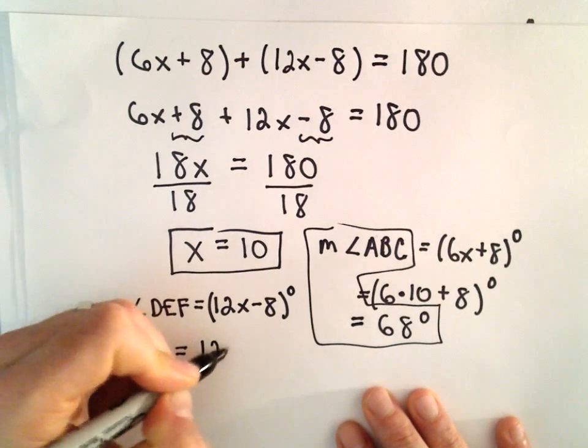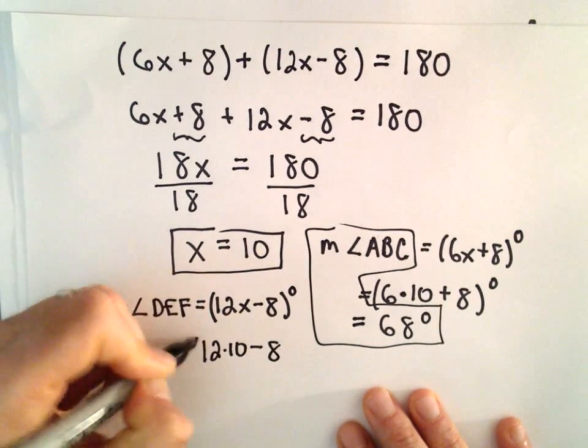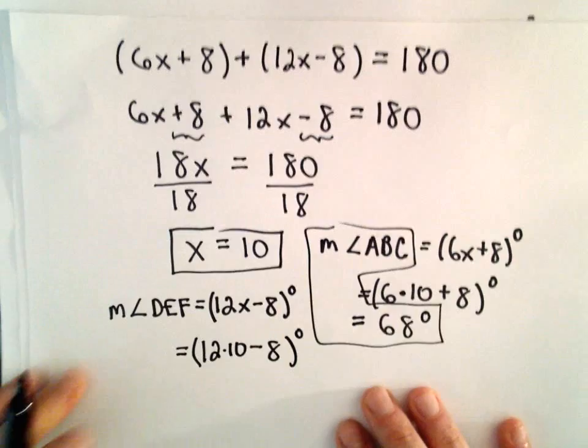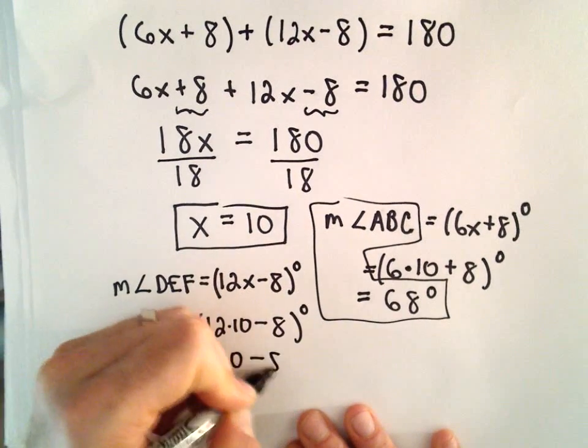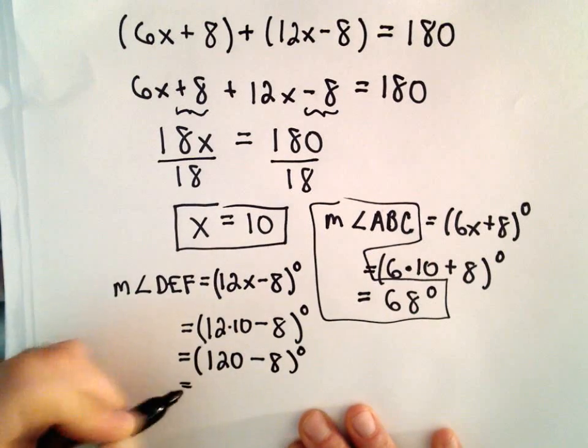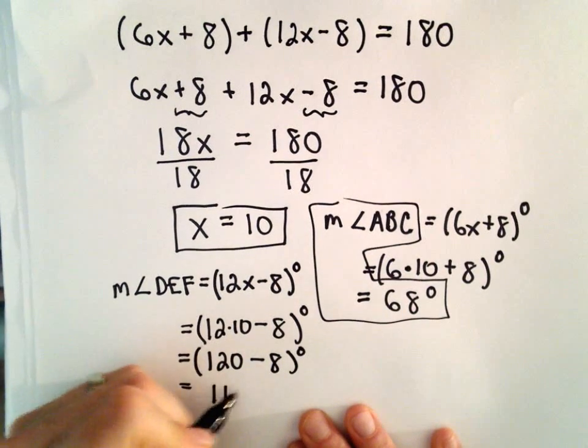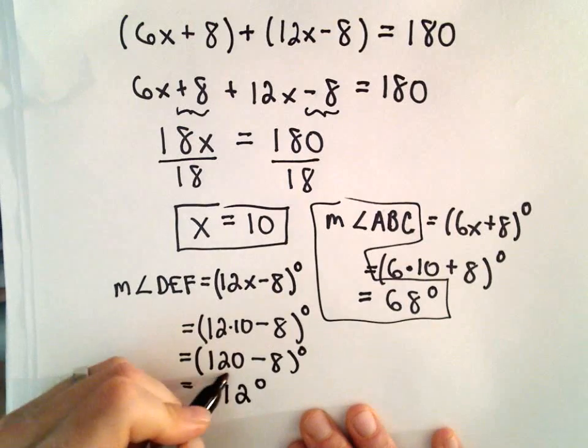12 times 10 minus 8 degrees. Well, 12 times 10 will be 120 minus 8 degrees, and 120 minus 8 will give us 112 degrees.